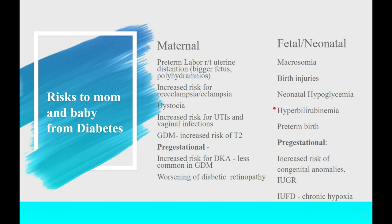Hyperbilirubinemia — jaundice — is also a risk. Bilirubin is a yellow pigment in red blood cells. Babies affected by uncontrolled diabetes in pregnancy grow extra red blood cells due to small hypoxic insults every time sugar levels rise. After birth, when those extra cells are no longer needed, they all break down. If the liver can't conjugate and excrete them, bilirubin levels rise sharply. High jaundice itself can lead to brain damage.